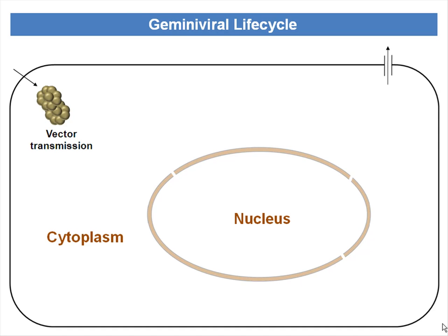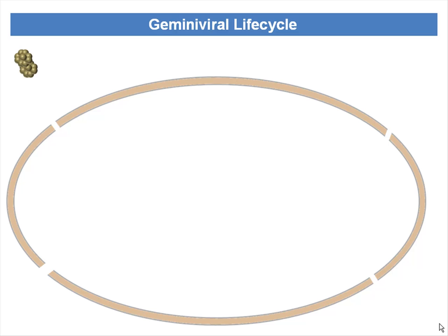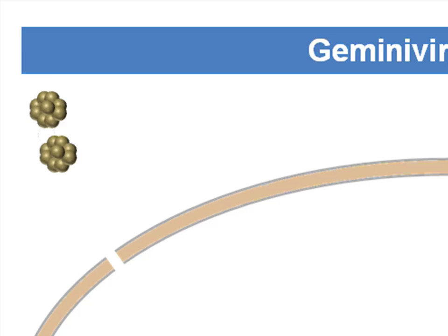In this animation, I will explain the Gemini viral life cycle in brief. Gemini viruses enter the plant cell cytoplasm through the insect vector. Once it enters the cytoplasm of the cell, it has to get unwound before it enters the nucleus. Here you can see the uncoating of the virus where the single-stranded genome is released from the virus particle.